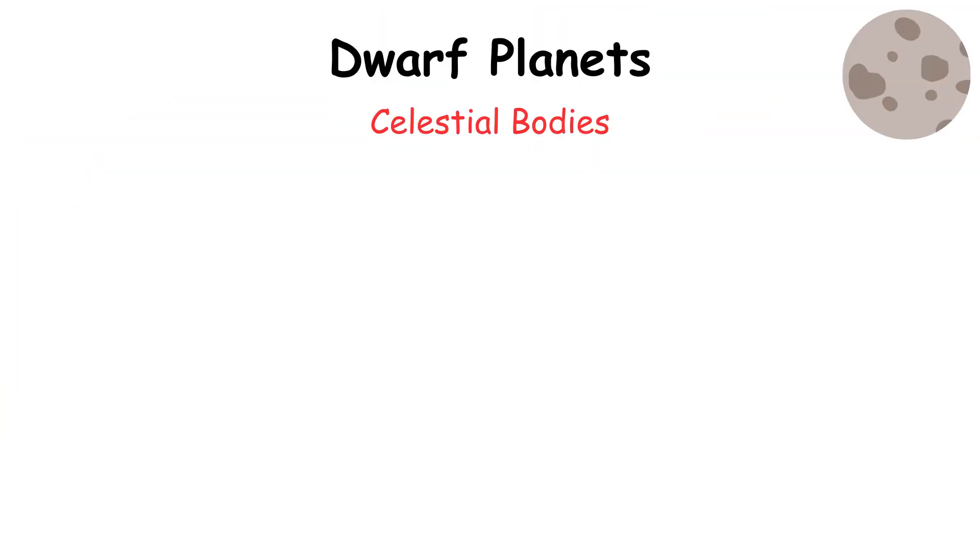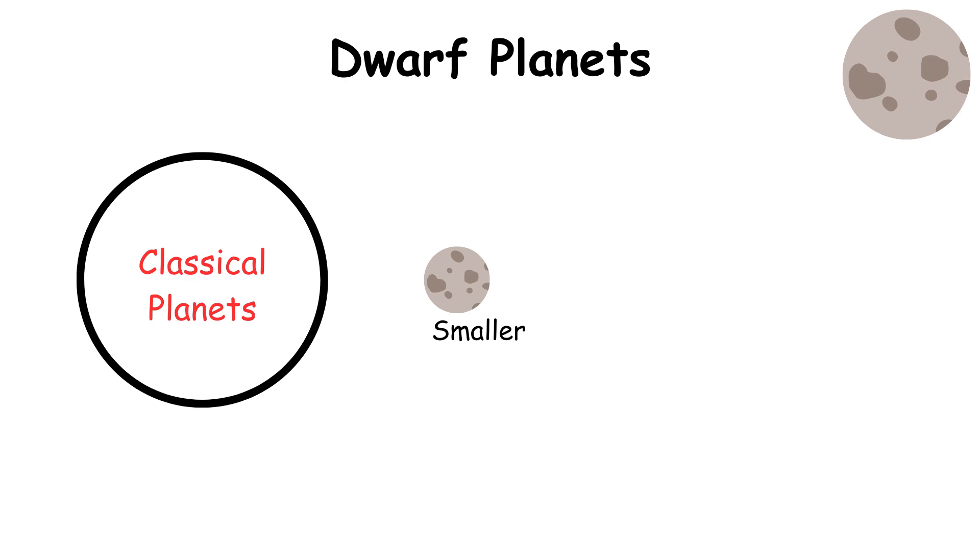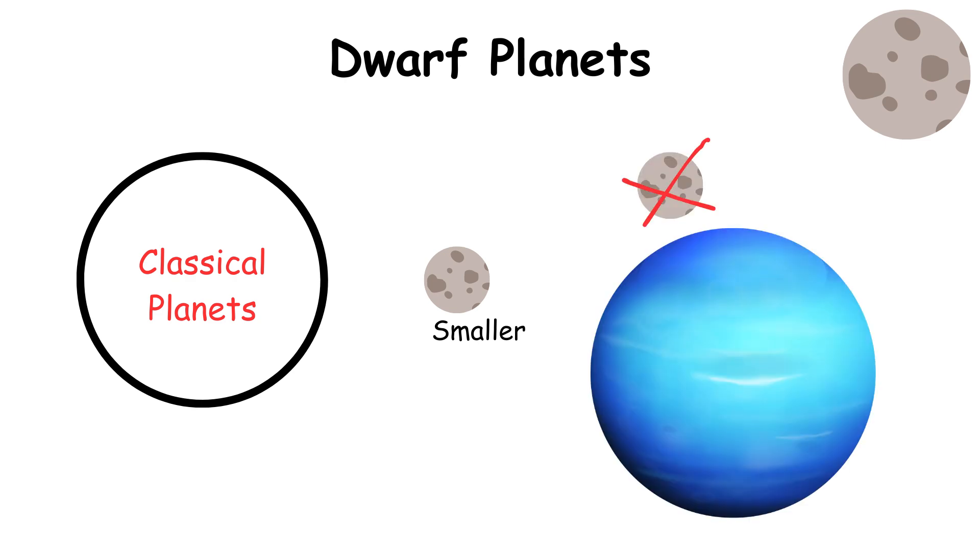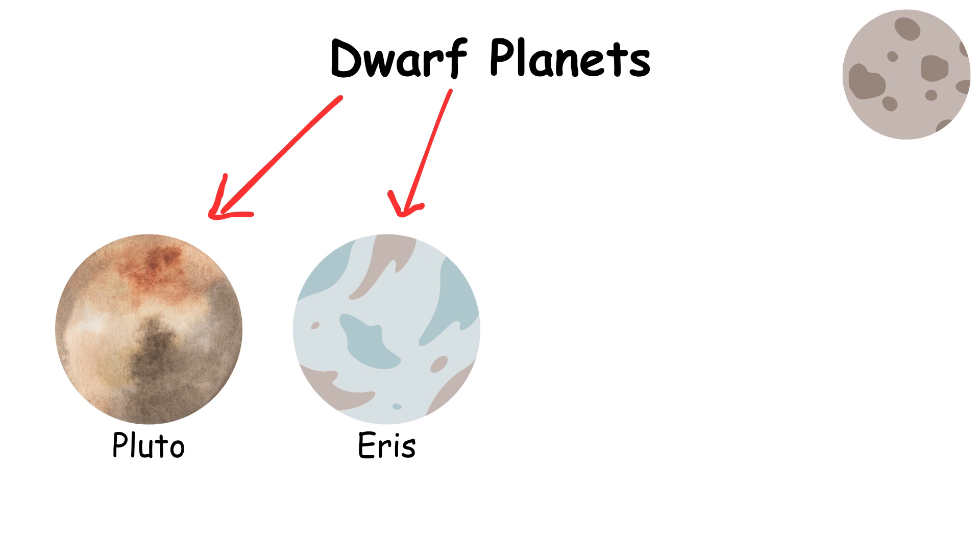Dwarf planets are celestial bodies that orbit the Sun and have sufficient mass to assume a nearly round shape. They are smaller than the eight classical planets and are not satellites of other planets. Examples of dwarf planets include Pluto, Eris, Haumea, and Ceres.